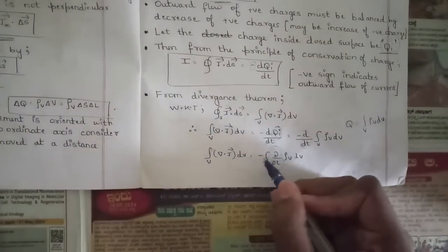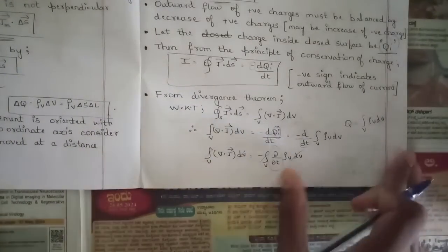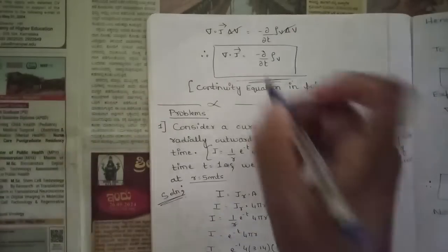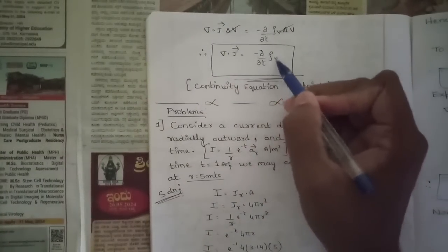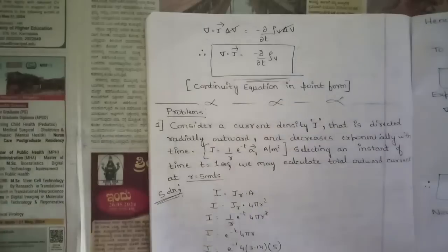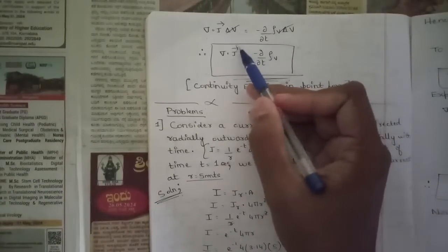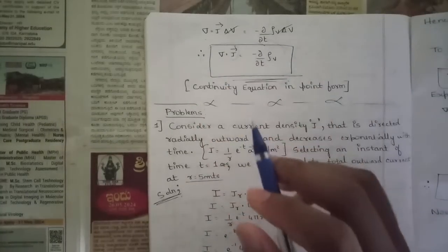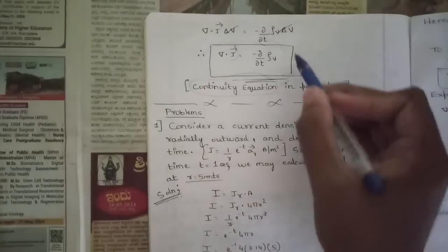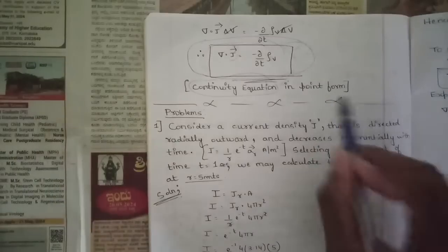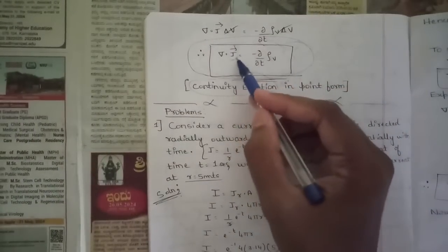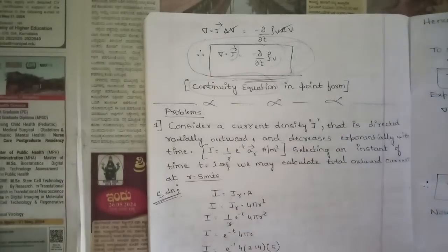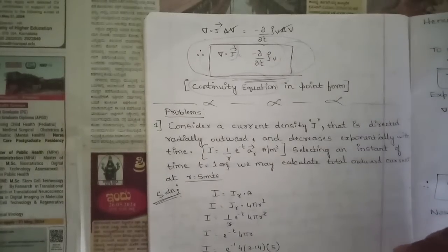From both sides we cancel the volume integral and dV. The remaining part is ∇·J = -∂rho_V/∂t. This is the relationship between current density and volume charge density, and this equation is called the continuity equation in point form. Please note it down — this is the general relationship between current density and volume charge density.